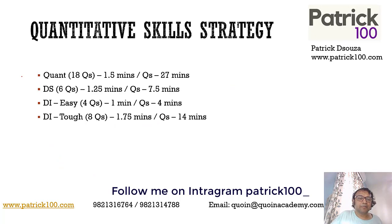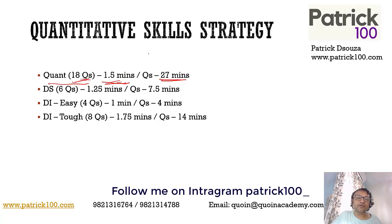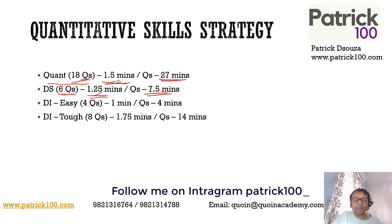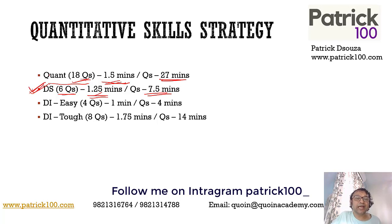If you look at time per question, a CON question is approximately 1.5 minutes. So 18 questions will take you around 27 minutes. For DS, around six questions at 1.25 minutes gives you about 7.5 minutes, though DS should ideally take less than one minute. DS can finish fast because you only need to find out whether the information is sufficient or not — you don't need to fully solve it. Do practice DS; that's one area where you can gain marks.